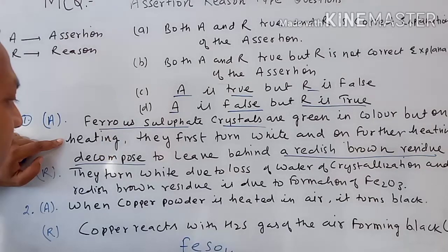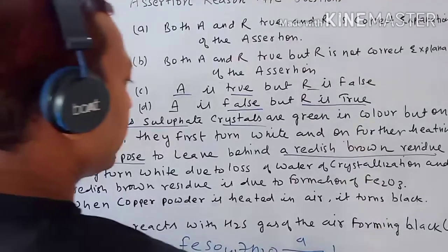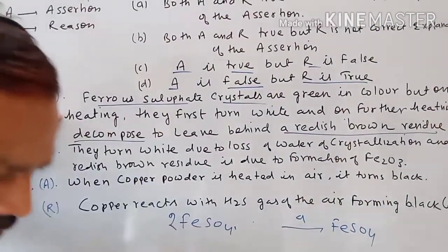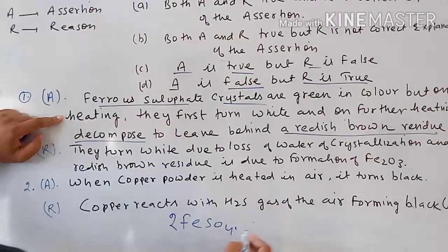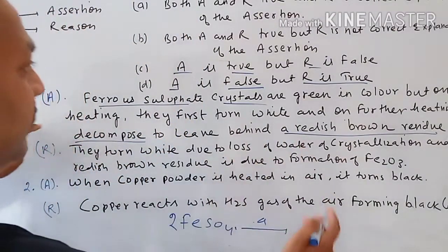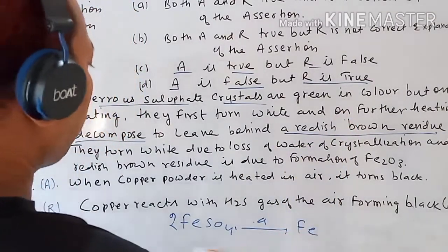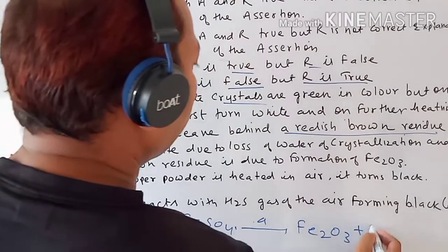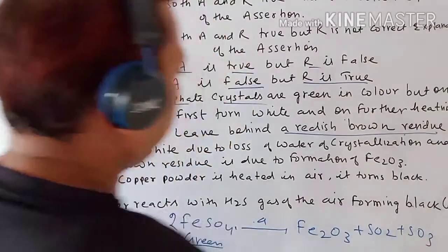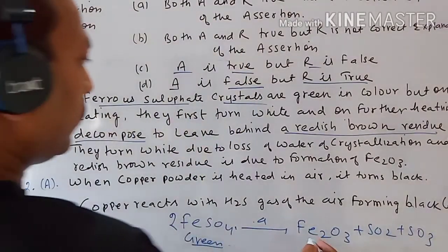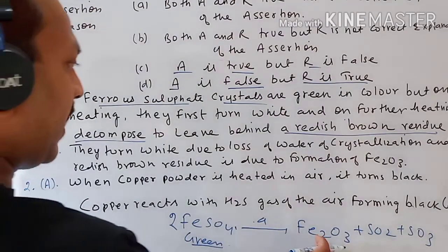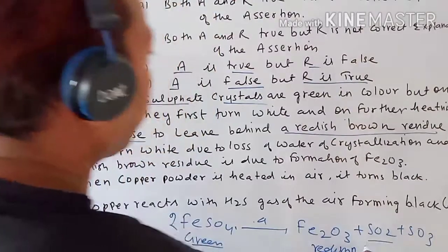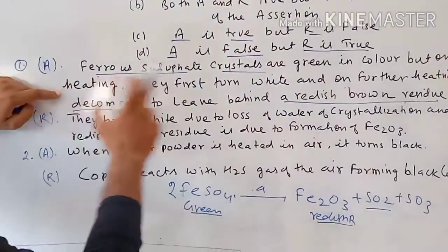The formula of ferrous sulfate is FeSO4. On heating ferrous sulfate, it decomposes. Ferrous sulfate crystals are normally green in color — they are ferrous sulfate heptahydrate. On decomposition: 2FeSO4 gives Fe2O3 plus sulfur dioxide and sulfur dioxide. Iron oxide is red-brown in color.